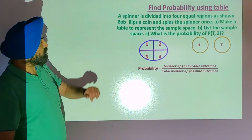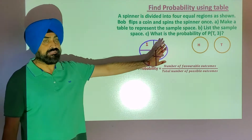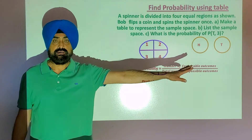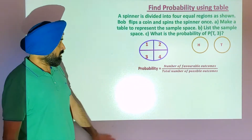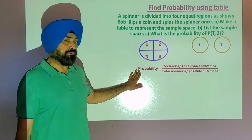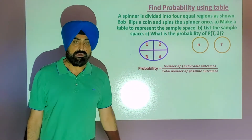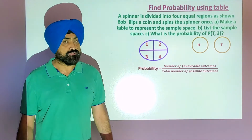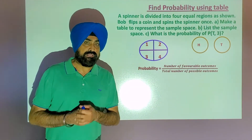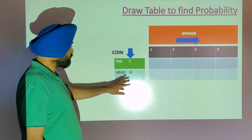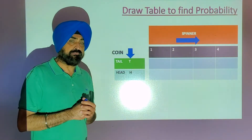The same question: a spinner with four equal parts and then a coin is flipped. The formula to find probability is the same — number of favorable outcomes divided by total possible outcomes. Now, how can we draw the table? There are two ways we can draw the table.